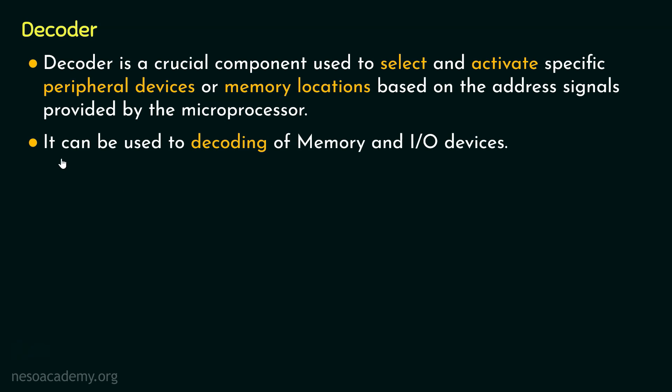In simpler terms, it can be used to decoding of memory and input-output devices. Basically, with the help of the decoder, from the provided signals through the address bus of the microprocessor, it is decoded whether the microprocessor is communicating with memory, to be precise with a particular location within the memory, or whether it is communicating with the input-output devices.